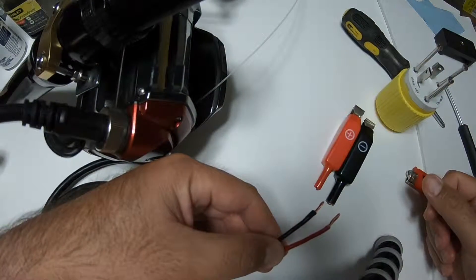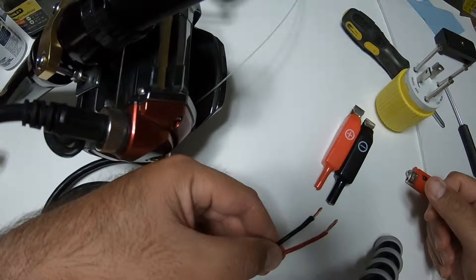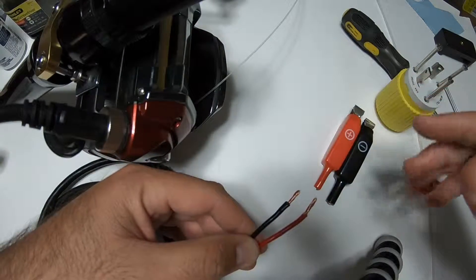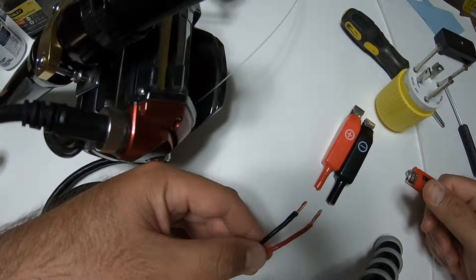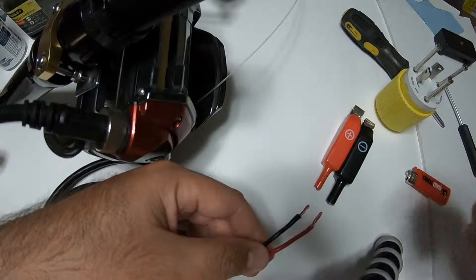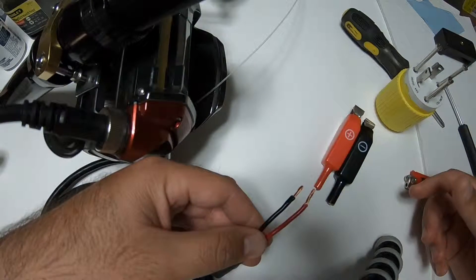So I just picked up this Daiwa Seaborg MJ-1200 beast of a reel. The thing is just insane. I can't wait to fish it here. But we need to re-rig it and re-wire it.